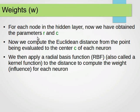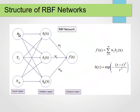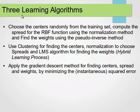Once we have parameters R and C for each hidden layer node, we compute the Euclidean distance from the point being evaluated to the center C of each neuron, then apply the radial basis function (kernel function) to that distance to compute the weight or influence of each neuron. Note that there are no weights between the input layer and the hidden layer; weights exist only between the hidden layer and the output layer.